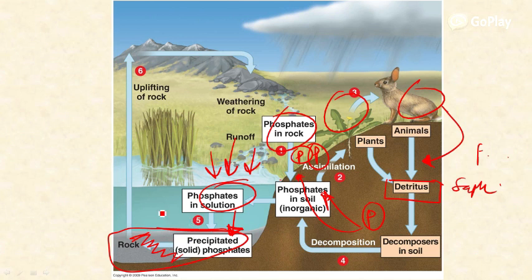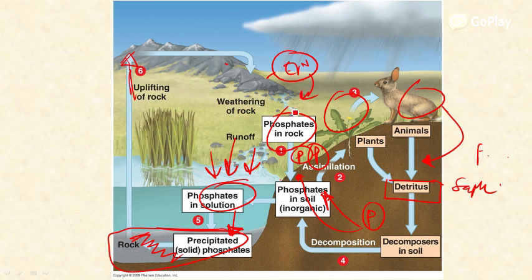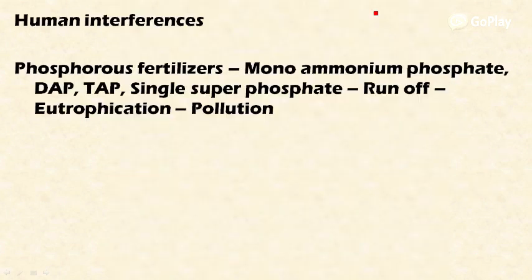The oceanic rocks serve as a repository for phosphorus. Over millions of years, upliftment of land and mountain-building activities brings this deposited phosphorus back up. This upliftment leads to weathering, and after weathering, erosion carries the runoff again to water bodies. In this way the phosphorus cycle continues.